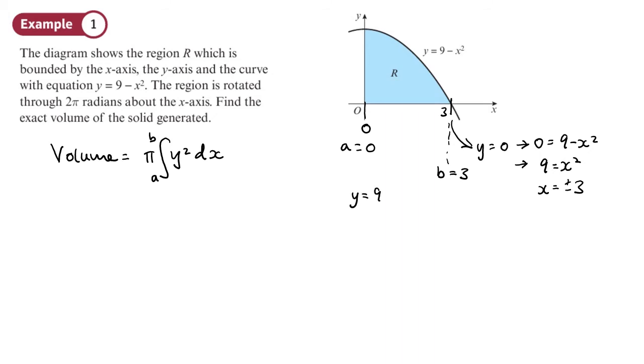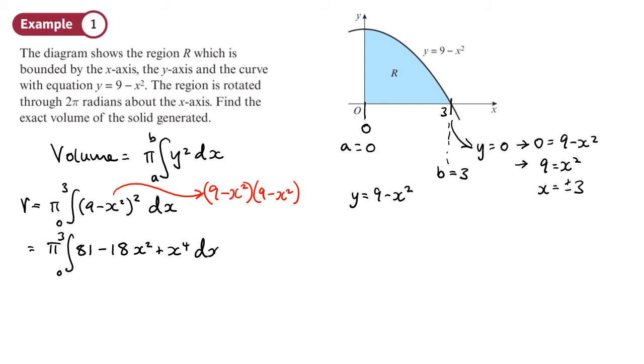Now y is 9 minus x squared, so we're going to have to work out y squared. The volume is π limits of 0 and 3, and this is going to be 9 minus x squared all squared dx. Let's square that, multiply it by itself. We've got 9 minus x squared times by 9 minus x squared. That would give me 81 minus 18x squared plus x to the power of 4 dx.